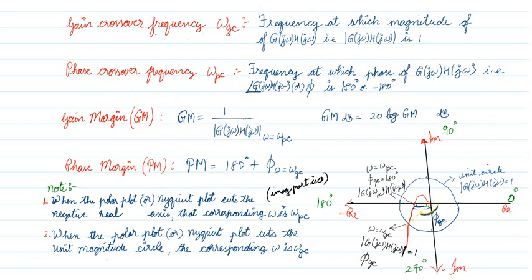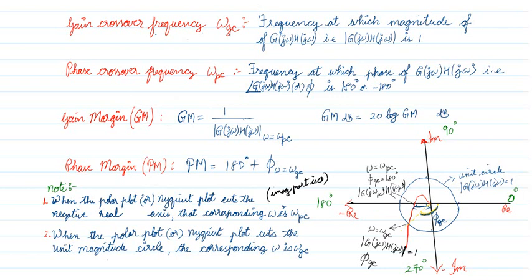The corresponding magnitude at ω_pc is shown by the blue line. Some important points: when the polar or Nyquist plot cuts the negative real axis, the corresponding omega is ω_pc. To find ω_pc, we equate the imaginary part of the transfer function to zero. On the real axis, the imaginary part is zero.